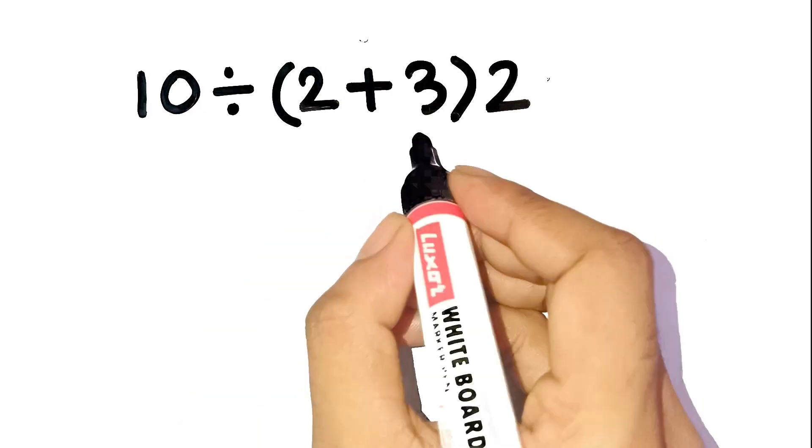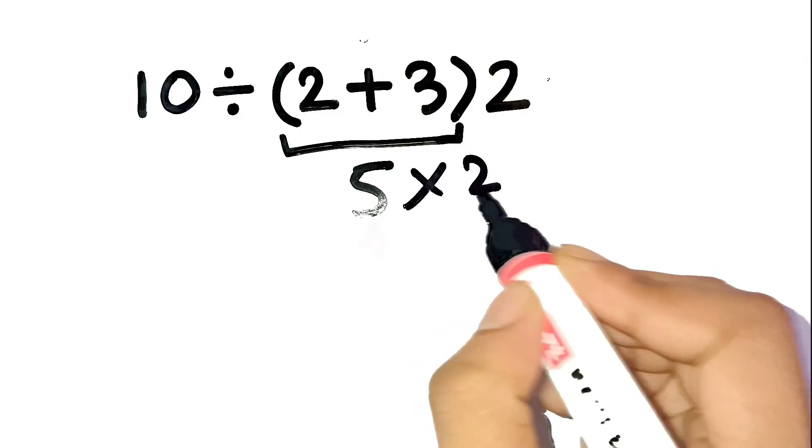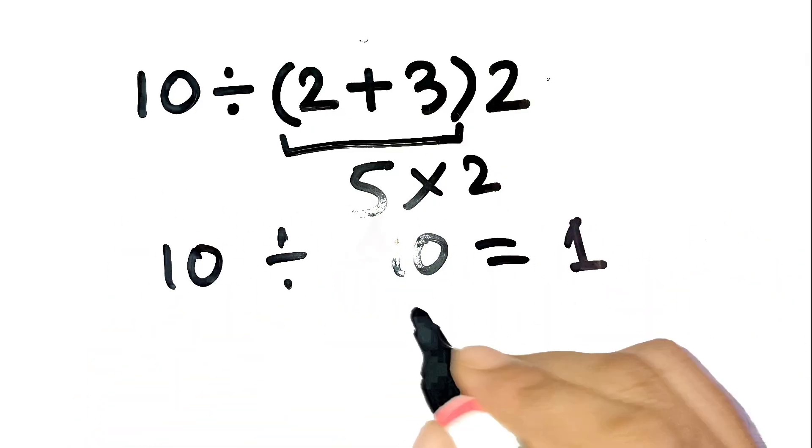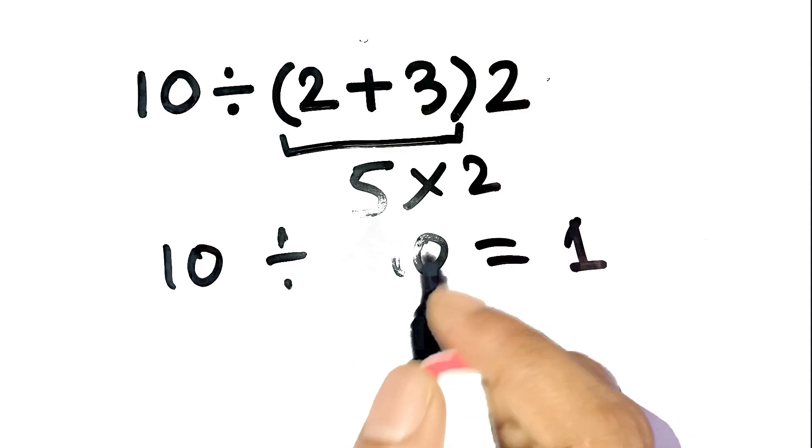Most people immediately jump in and think, all right, 2 plus 3 is 5, multiplied by 2 is 10, then 10 divided by 10 is 1. And yeah, that seems super logical at first glance, right? Totally makes sense.